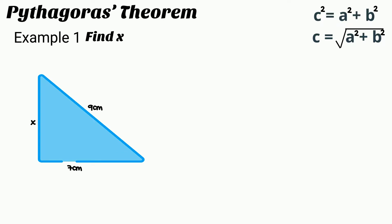In this example, the missing length is one of the smaller lengths, so we have to rearrange the Pythagoras equation before we can solve for x.